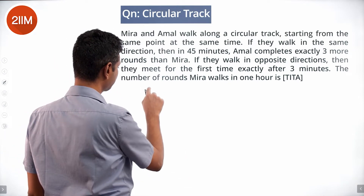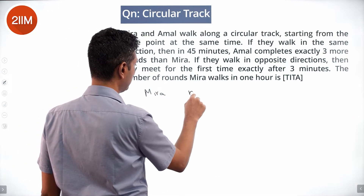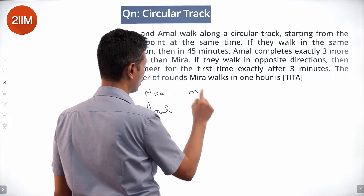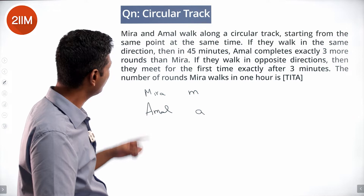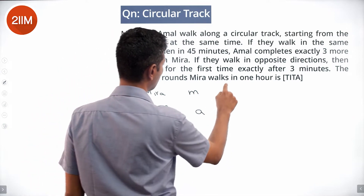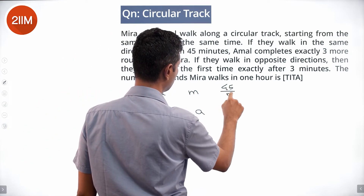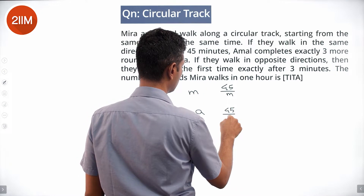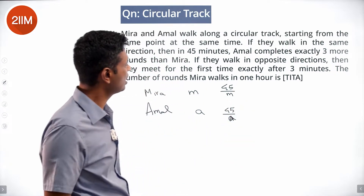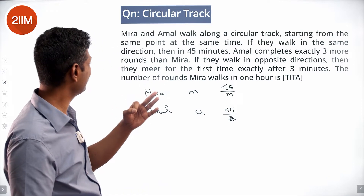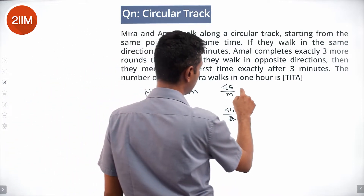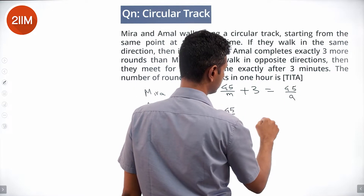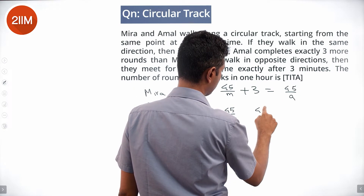Let Meera take m minutes for a lap and Amal take a minutes for a lap. In 45 minutes, Meera does 45/m laps and Amal does 45/a laps. Since Amal completes exactly three more rounds than Meera: 45/a minus 45/m equals 3.